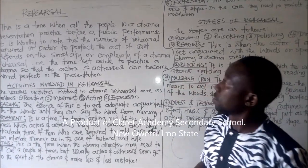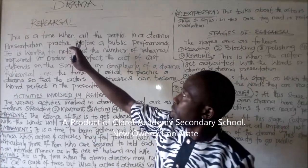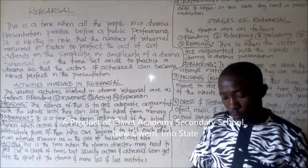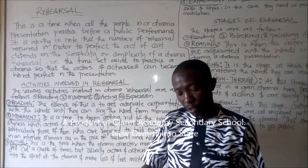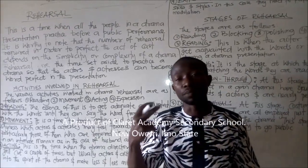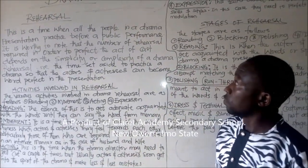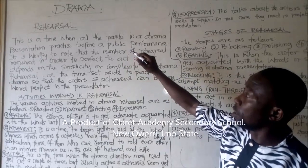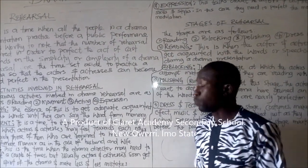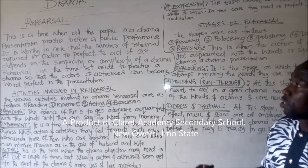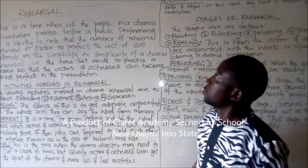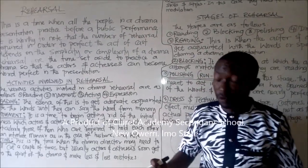Our topic is titled Rehearsal. From the scheme of work, it is divided into two: Rehearsal A and Rehearsal B. We will be reading on Rehearsal A, where we will discuss about the processes. Processes include the recitation, the narration, the time, and the repetition.